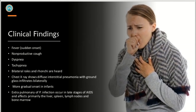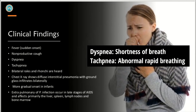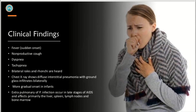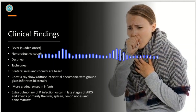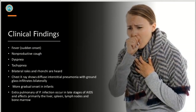Clinical findings include fever with sudden onset, non-productive cough, dyspnea, tachypnea, and bilateral rales and ronchi are heard. More gradual onset is seen in infants.